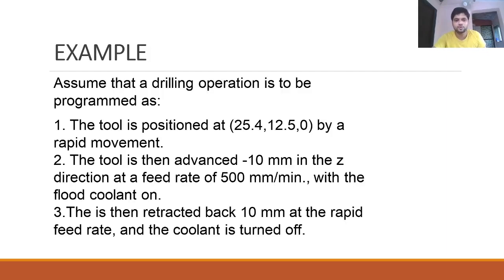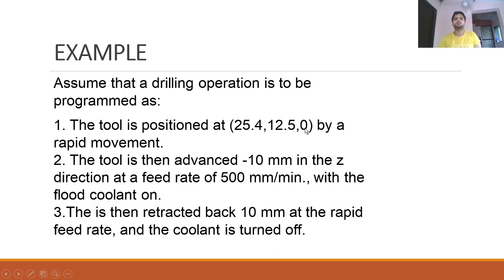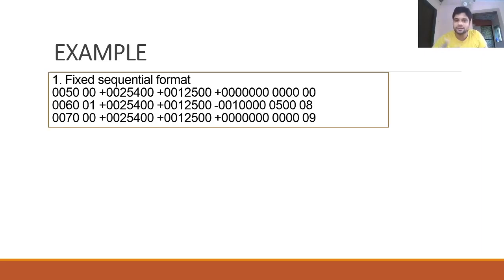The tool is advanced minus 10 mm in the Z direction at a feed rate of 500 mm/min with flood coolant on, then retracted back 10 mm at rapid feed rate with coolant turned off. Initially the tool is at Z=0 with specified X,Y coordinates, moves down to Z=-10, then comes back up to Z=0. We will compare how this same instruction is represented in each format.